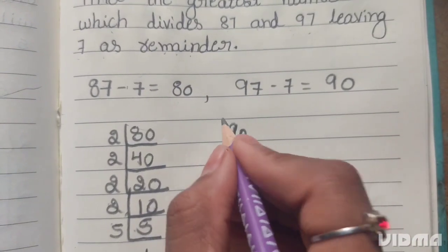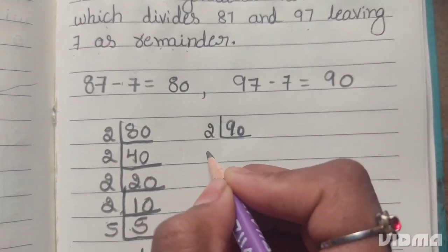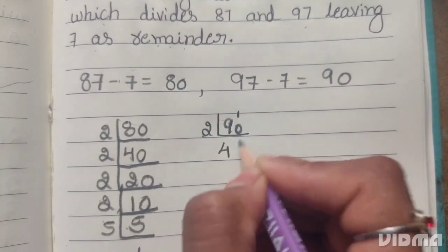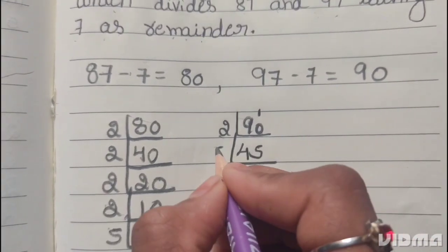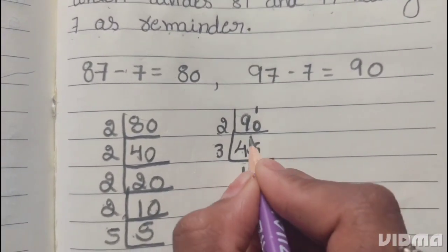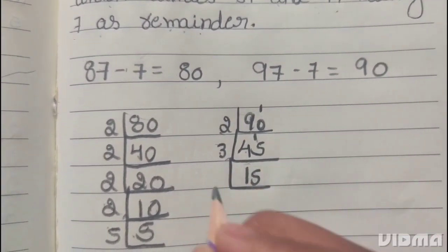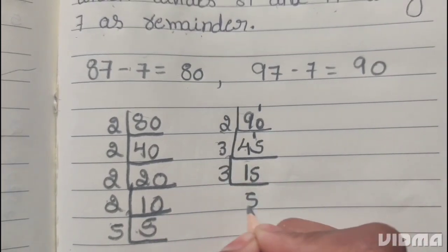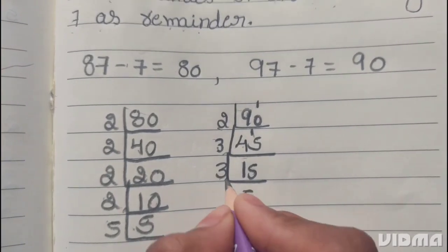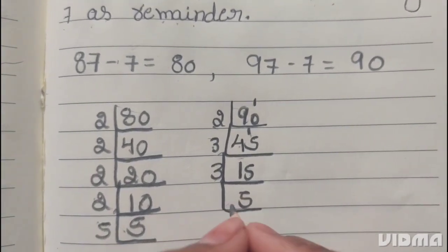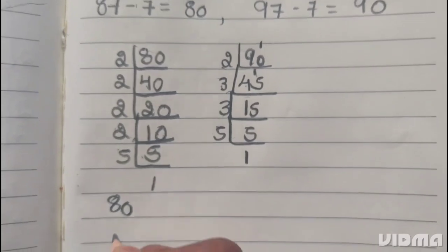Next, 90. 90 is divisible by 2. 2 fours are 8, 1. 2 fives are 10. 45 is divisible by 3. 3 ones are 3, 1. 3 fives are 15. 5 is prime number. It divides itself. 5 ones are 5.